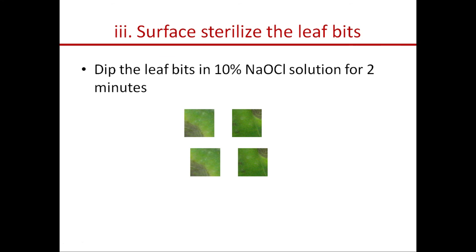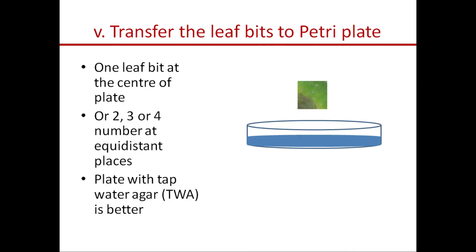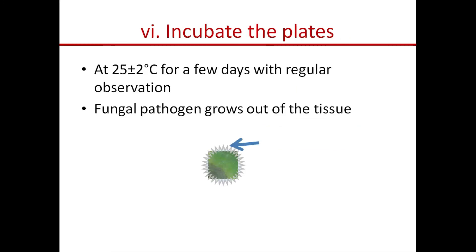Surface sterilize the leaf bits by dipping them in sodium hypochlorite solution for two minutes. Then wash the leaf bits with sterile water using two to three changes of sterile water. Dry the bits with sterile blotting paper. Then transfer the leaf bits aseptically to a Petri plate — you can transfer one leaf bit at the center of a plate or two, three, or four leaf bits at equidistant places — to a plate containing nutrient medium or tap water agar.